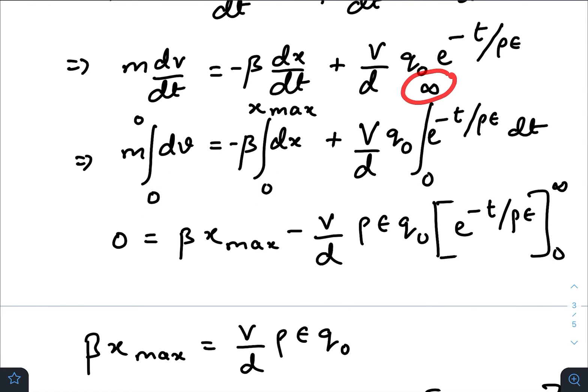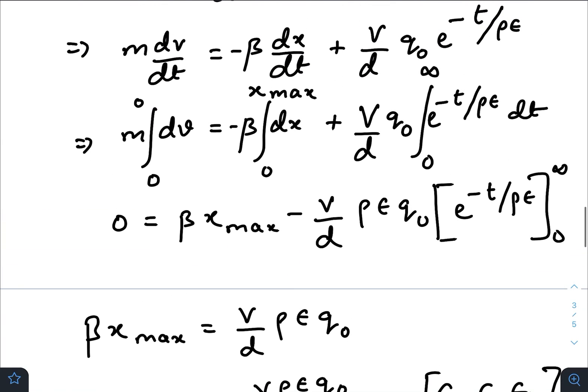Now integrating, putting all the required limits: at t equals zero, x was zero, v was also zero. After a long time, the charge will vanish, so there will be no electric force. The charge will not move further at x equals x_max. At that time also, v will become zero. So integrating here, we get this one, putting the required limits from zero to infinity.